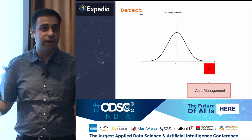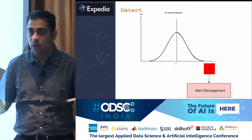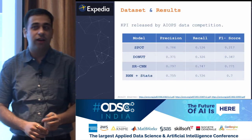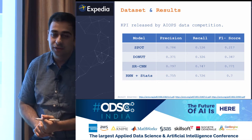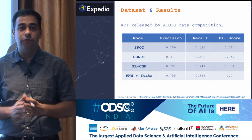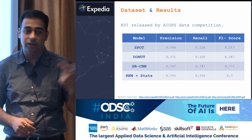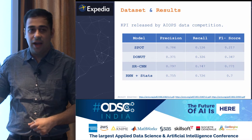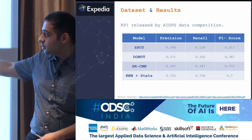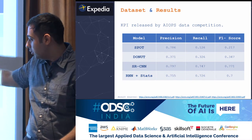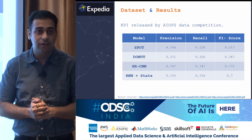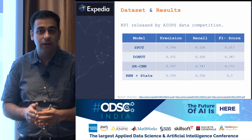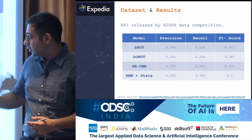Now let's see the results. Our first dataset was the KPI dataset released by the AIOps data competition. This dataset has time series from various companies such as Alibaba, eBay, and others. We ran our algorithm — RNN plus statistical model — on this dataset and got an F1 score of 0.7, which is pretty good considering the time series spanned multiple companies.